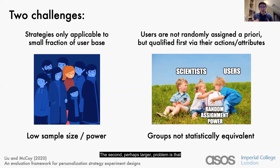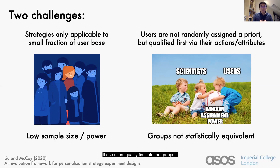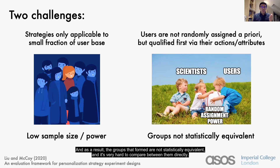The second, perhaps larger, problem is that users in personalization strategy experiments are not randomly assigned a priority. Unlike a simple A/B test for UI elements, where you randomly split a user base into two and show them two different UI designs to see which one performs better, these users qualify first into the groups, perhaps by their actions, perhaps by their attributes. As a result, the groups that form are not statistically equivalent and it's very hard to compare between them directly.